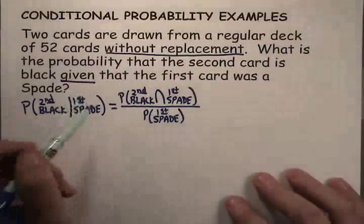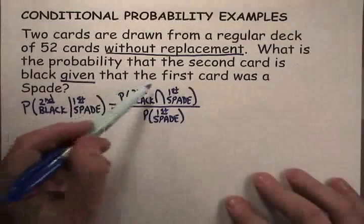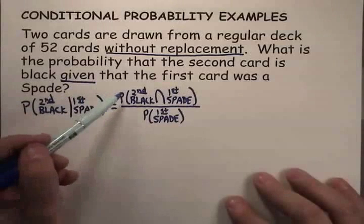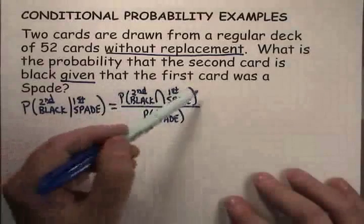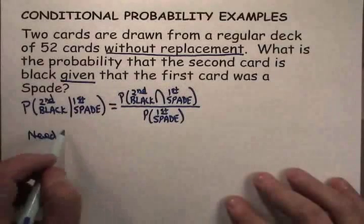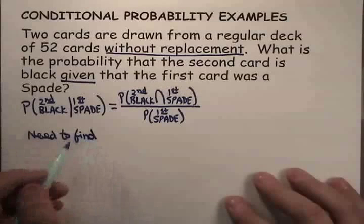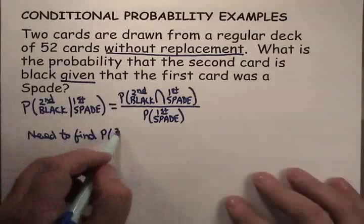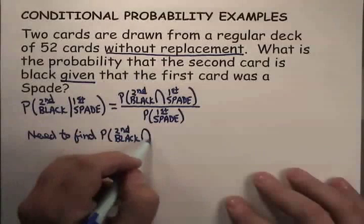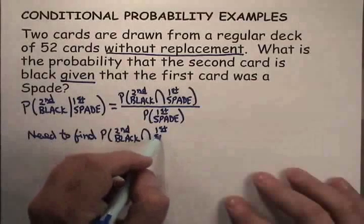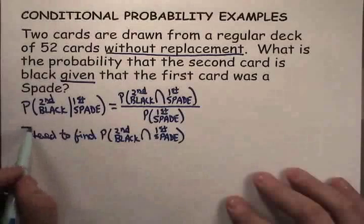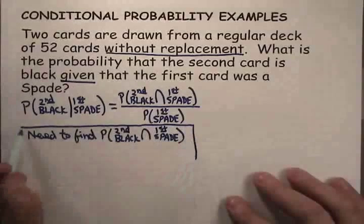You remember, in an earlier problem, we calculated the numerator separately as part A. Here, we're not breaking it into parts, but we still need to find the value of that numerator. We need to find the probability that the second one is black and the first one is a spade. We have to have that probability in order to answer this question, so let's do it.